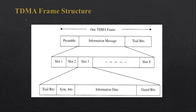To understand TDMA better, we need to focus on the frame structure of TDMA. One frame of TDMA consists of a preamble, information message, and trail bits, all transmitted in different slots. We have slot 1, slot 2, up to slot N. Each slot again contains trail bits, sync bits, information data, and guard bits.